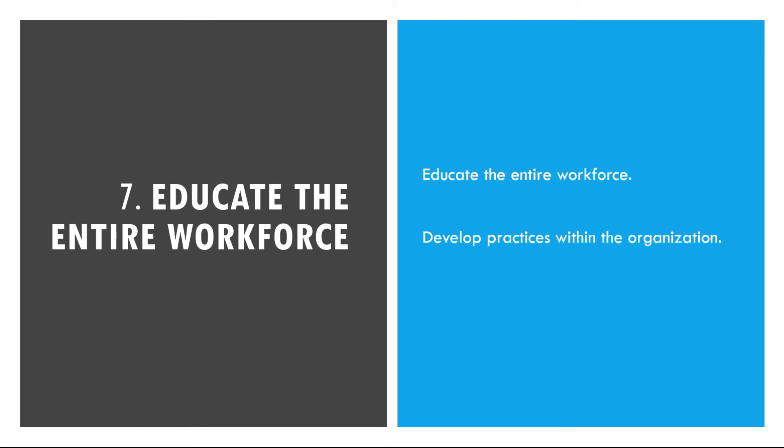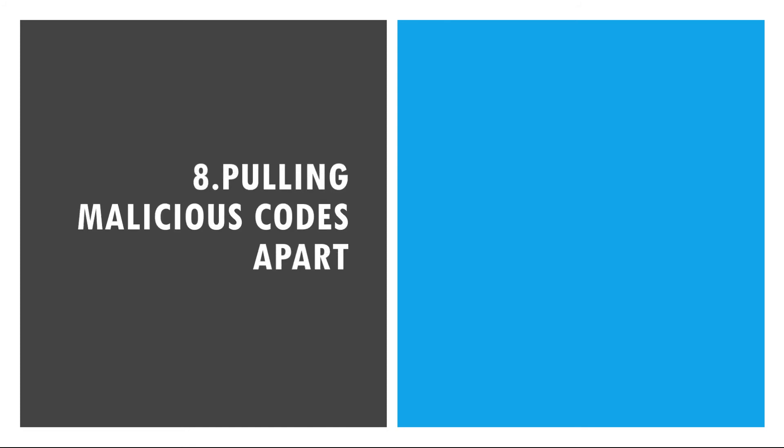Number 8: Pulling malicious codes apart. One of the things cybersecurity analysts do every day is pull malicious codes apart. By doing so, they understand how hackers work and can put up strict security measures to prevent these attacks in the future. While cybersecurity analysts work around the clock to thwart cyberattacks, they also use every attack to their advantage. Each code comes with new information that adds to the analyst's knowledge and subsequently strengthens their security measures.